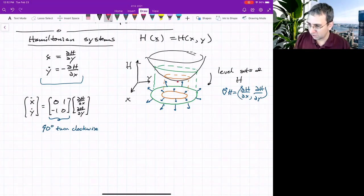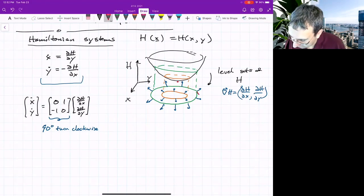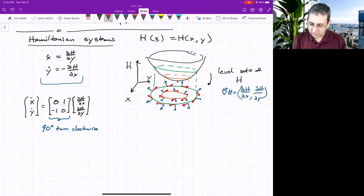What does that mean? 90 degree turn clockwise. Take any of these vectors over here on the right, the gradients, and we'll be rotating by 90 degrees. That's what is going on here in these red vectors. So I'm plotting the vector field given by this system up here. It's the gradient, but rotated. Sometimes it's been called the skew gradient.